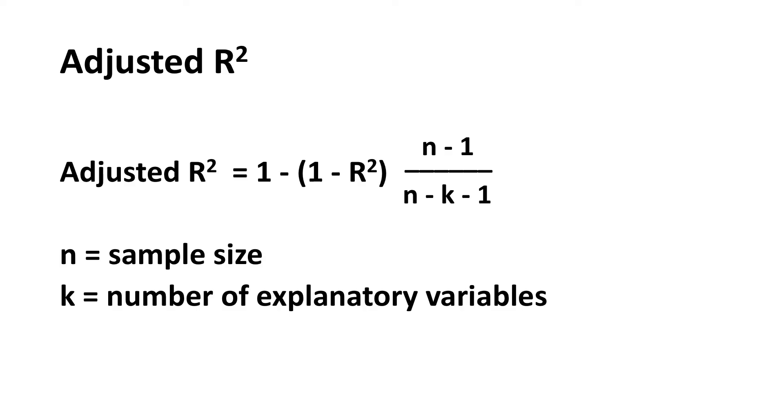Here's a formula that's used to calculate the adjusted R-squared. The adjusted R-squared is equal to 1 minus 1 minus the R-squared, and that amount is multiplied by n minus 1, where n is the sample size, divided by n minus k minus 1, where k is the number of explanatory variables.